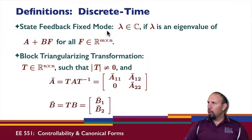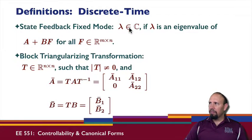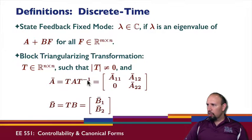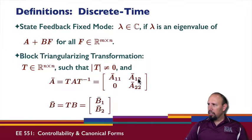We can talk about a state feedback fixed mode. If lambda is an eigenvalue of the matrix A + BF for all F, then we have what is called a state feedback fixed mode — that value is fixed regardless of F. We can also talk about block triangularizing transformations. A block triangularizing transformation is a non-singular transformation T such that TAT⁻¹ gives a block of zeros in the lower left, yielding matrices B1 and B2 bar.